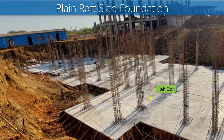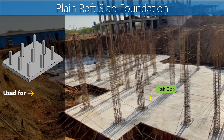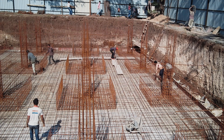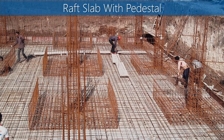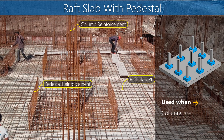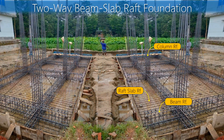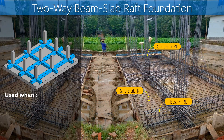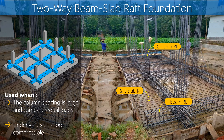The plain raft slab can be used for fairly small and uniform column spacing with relatively light loads. The raft slab with pedestal can be used when columns are subjected to very heavy loads — pedestals are provided under the columns to guard against punching shear and negative moments. When column spacing is large and carries unequal loads, a two-way beam and slab raft is more economical and is particularly suitable when the underlying soil is too compressible.